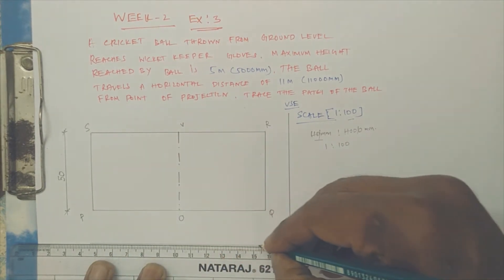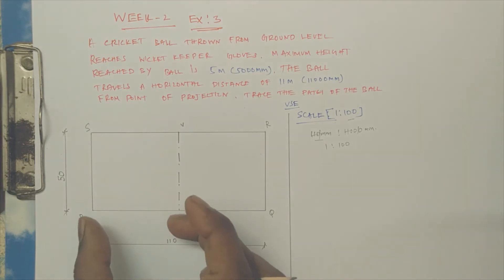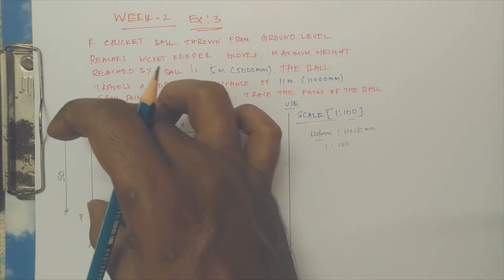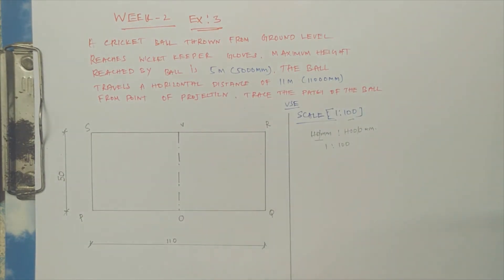You have to write the dimensions using a dimension line. This is 50 and this one is 110. You need to specify the scale.